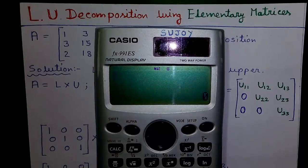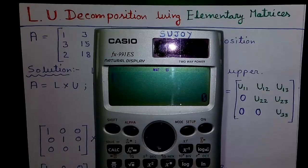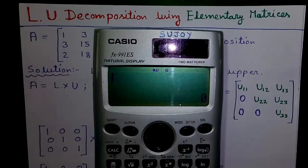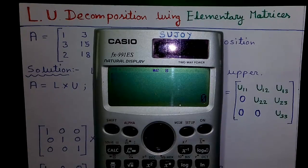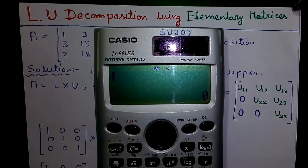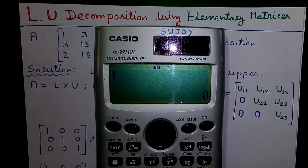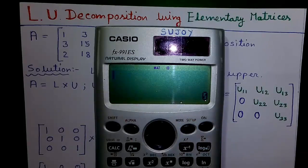Hi friends, I am Sujoy and I am back with a new series of tutorials. In this series, I am telling you how to do LU decomposition of a matrix. In my first video I covered the shortcut method, and in my second video the Crout's method. Today in this third video I will tell you two things: how to find LU decomposition by elementary matrices, and how to find it using the Casio FX-991ES Plus calculator. So let's start.